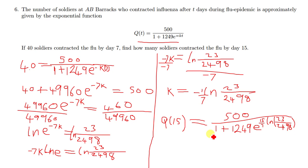So this is basically the number of soldiers that contracted flu by day 15. If you had a calculator, you can find the value of this, but since you don't have a calculator, you just leave it like this. So let's quickly move on to the next question, which is question 7.